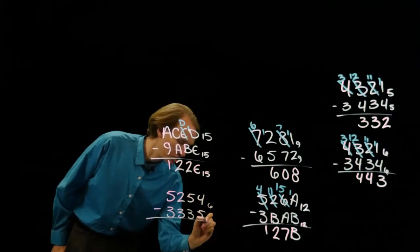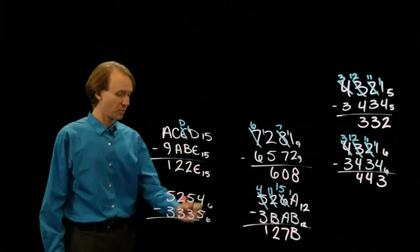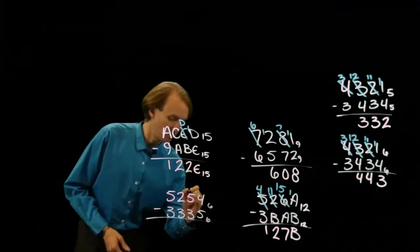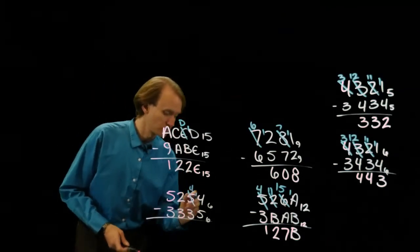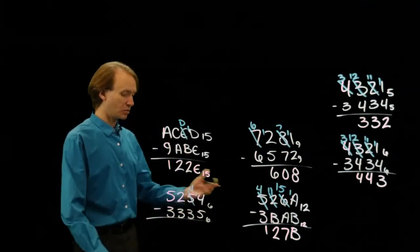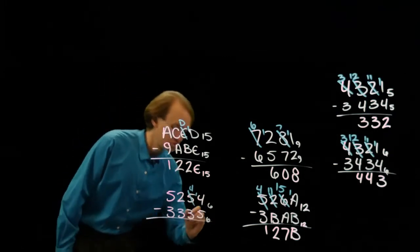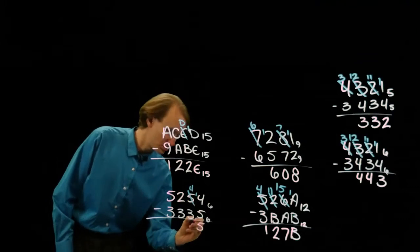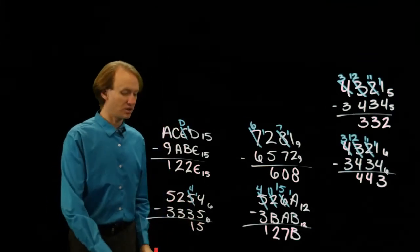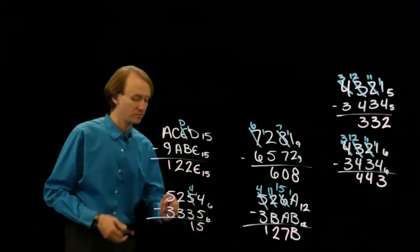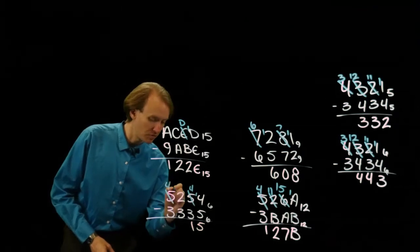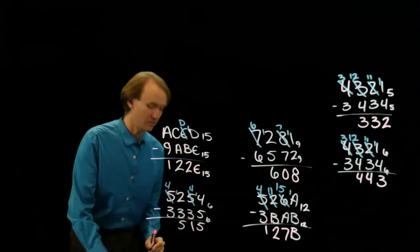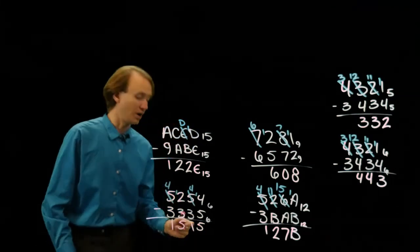So here I've got 2 numbers in base 6. 4 is less than 5, so I'll borrow something from over here. Now I have 14 minus 5, which will leave me with 5. 4 minus 3 is 1. 2 minus 3 — I'll need to borrow something again. 4 and a 12. 12 minus 3 is 5. 4 minus 3 is 1.